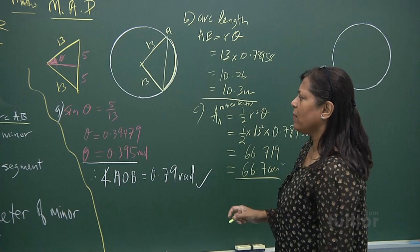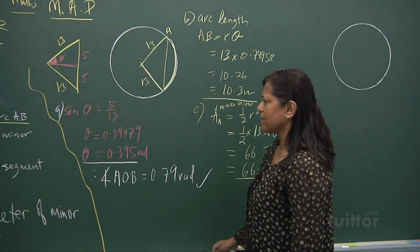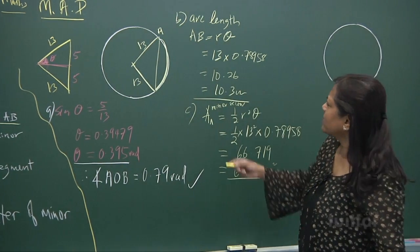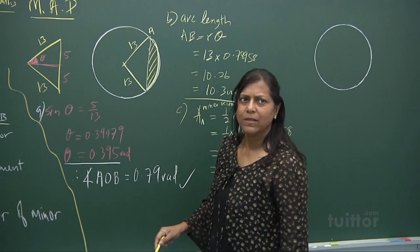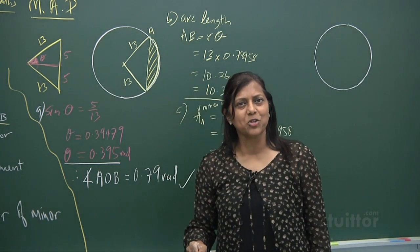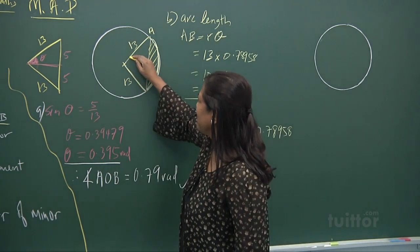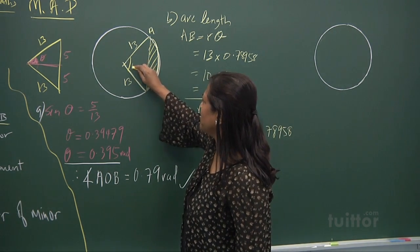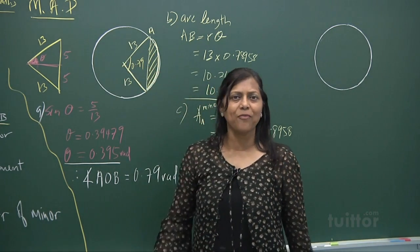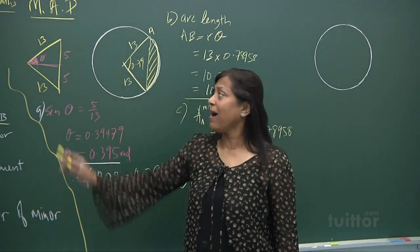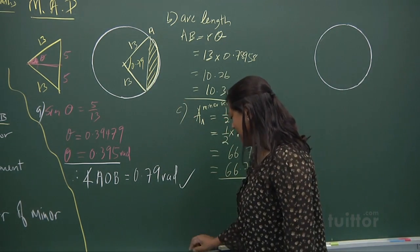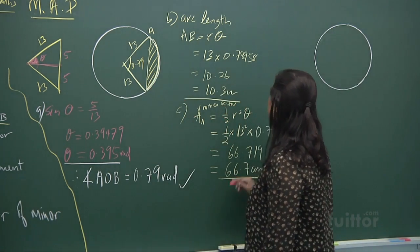Now let's work out the area of the segment — this region here. To find this segment, we use trigonometry. We know the two sides and the angle (0.790 radians), and the area of a triangle is half A B sine C.